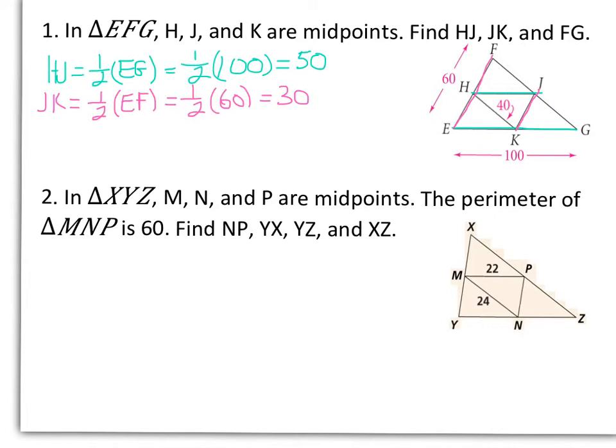And then finally, we want to find the length of FG. Well, HK is parallel to FG. HK is half of FG. But since we know HK and we don't know FG, we could also say that FG is equal to 2 times HK. So FG is 2 times 40, or 80. So our line segments of the triangle will be twice as big as our midsegments that they are parallel to.